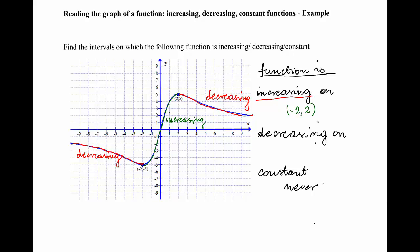For the decreasing parts, there are two pieces where the function is decreasing. The first one goes from negative infinity to the point (-2, -5), so the values of x change from negative infinity to -2. There is another piece: it starts when x equals 2 and continues until positive infinity. So the function is decreasing on the union of the intervals (-∞, -2) and (2, +∞).